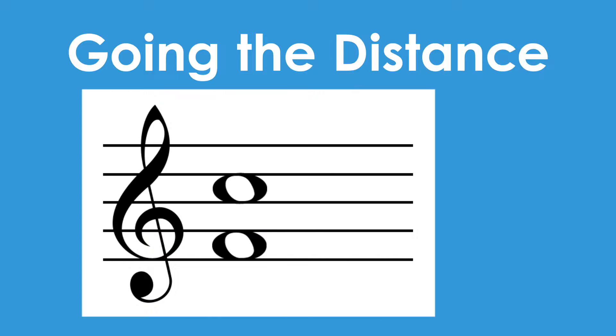For example, if we have this F and C on the treble clef, we will count the F space as 1, the G line is 2, the A space is 3, the B line is 4, and the C space is 5. So the distance these two notes are from each other is a fifth.